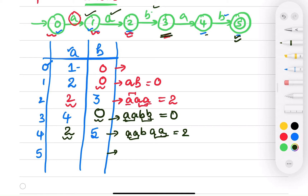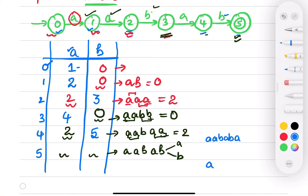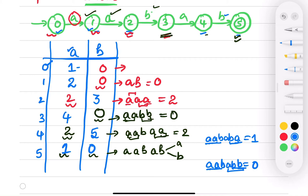At state five, you have 'aabab' and need to fill for both a and b. For 'aababa': checking matches — 'a' matches 'a', so only one matches. For 'aababb': checking 'a' matches 'b' — no; 'ab' matches 'ab' — yes, so the value is one. So the entries for state five are one and zero. The transition table is now complete — half the question is already done.